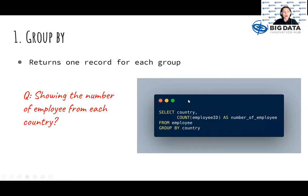First, the group by clause returns one record for each group. In the example here we show the number of employees from each country by using an aggregate function count to count the number of employee IDs. Besides, we also renamed the result column as number of employee. Here we grouped by country.